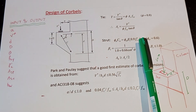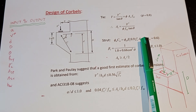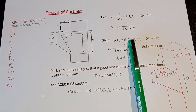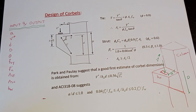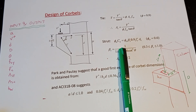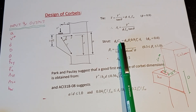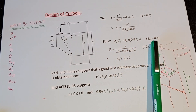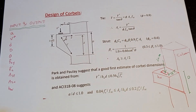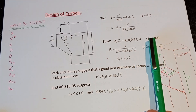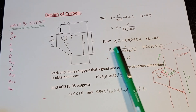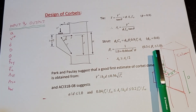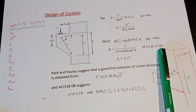For the strut, the compression capacity is φ_st · β_s · 0.9 · f'c · Ac, where Ac is the concrete area, φ_st = 0.6 (Australian code), and β_s is the strut efficiency factor. β_s is calculated from its equation and must be limited between 0.3 and 1. If the value falls outside this range, the limit value must be used.